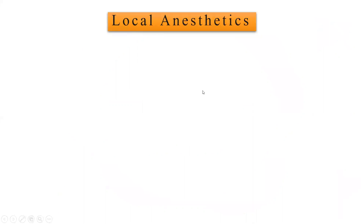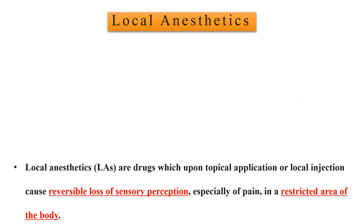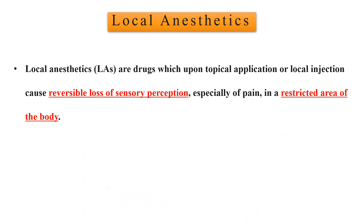Before that, let's look at what local anesthetics are. Local anesthetics are the drugs, agents, or chemicals which when applied topically or injected locally produce a reversible loss of sensory perception, especially of pain, in a restricted area of the body. It is a local anesthetic, so you can apply it to a restricted part of the body and it produces reversible loss of sensation to that restricted area.